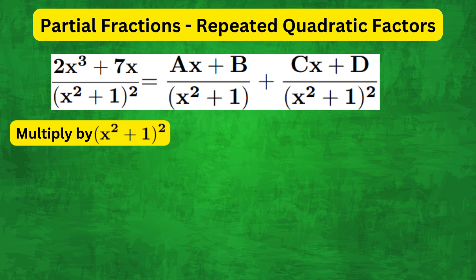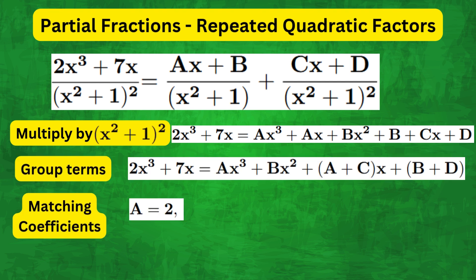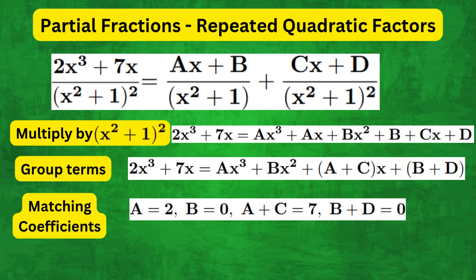We multiply both sides by (x² + 1)² and expand to get this equation. Then we group the terms and match coefficients to get A = 2, B = 0, A + C = 7, and B + D = 0.